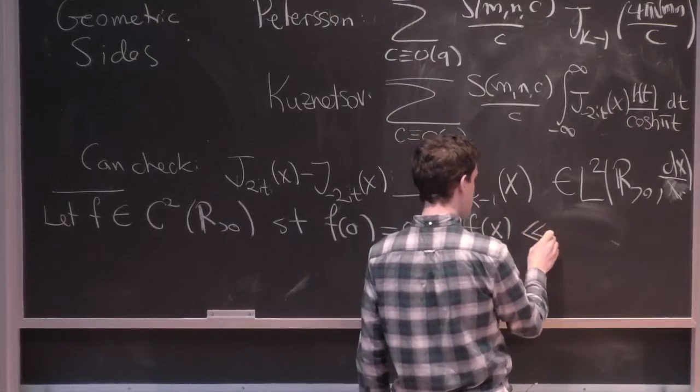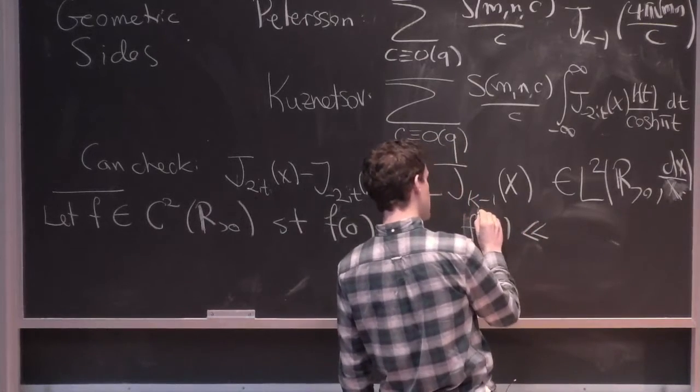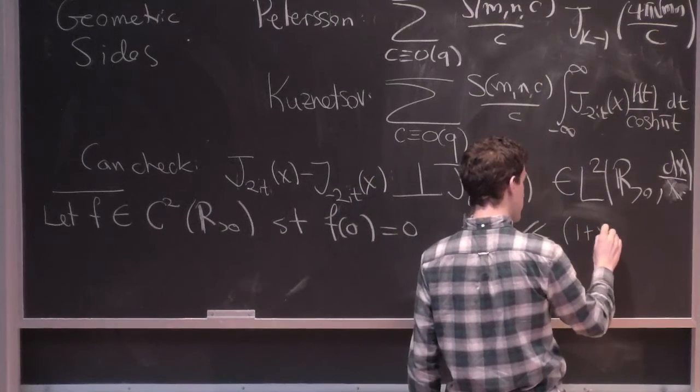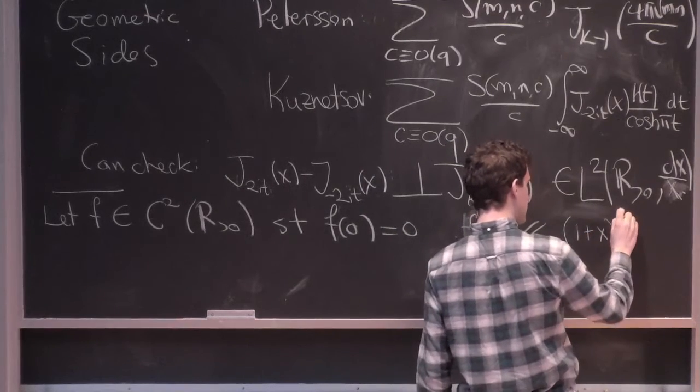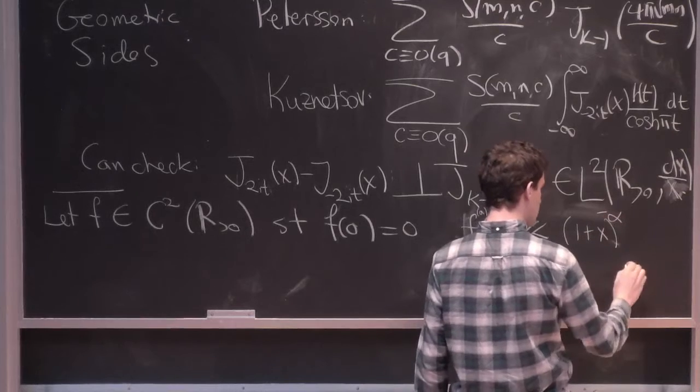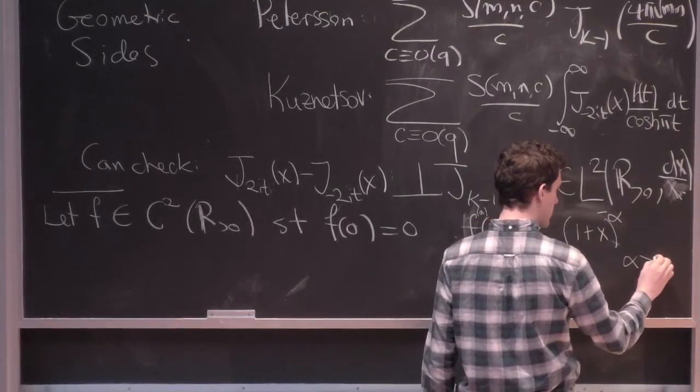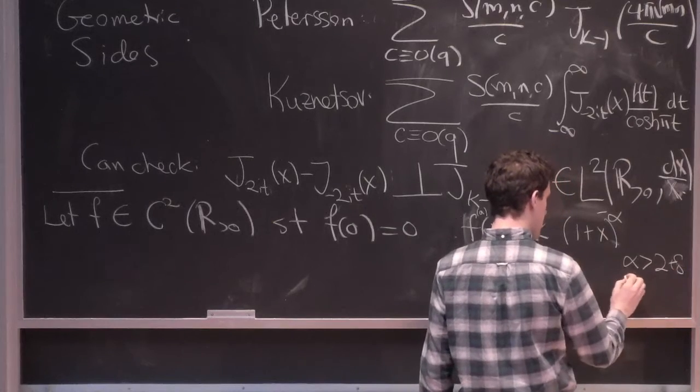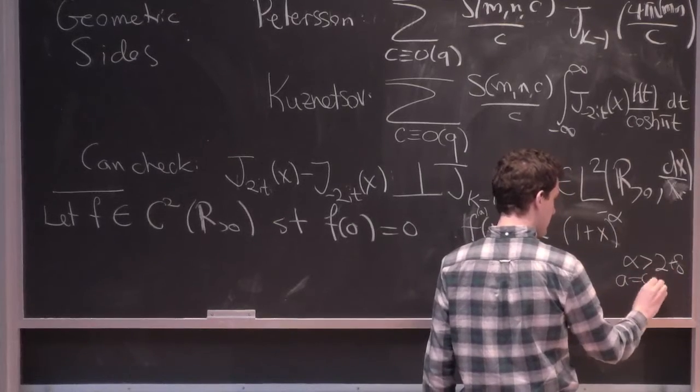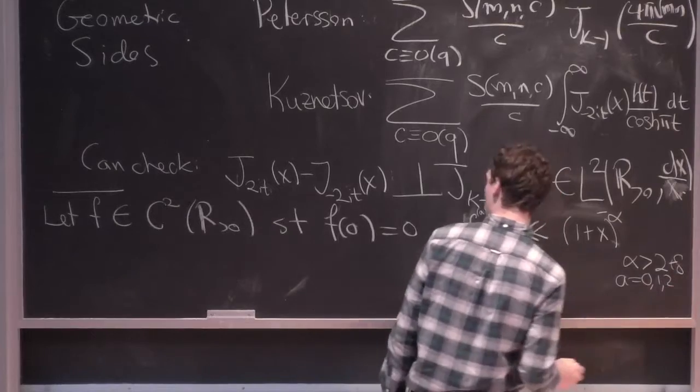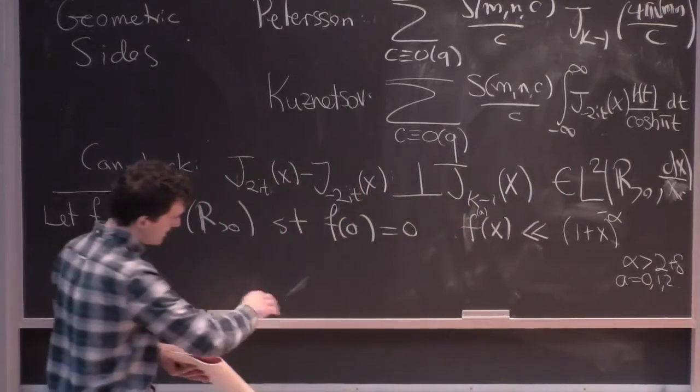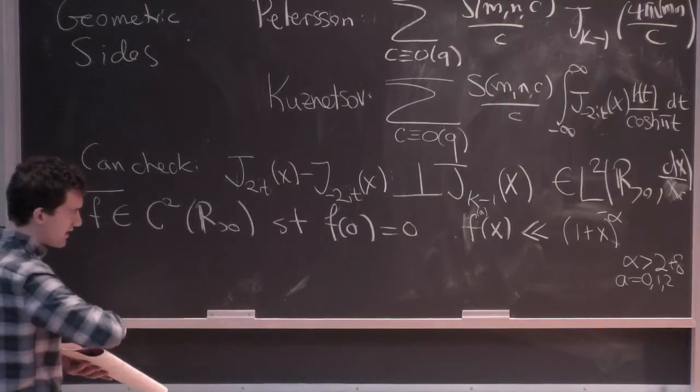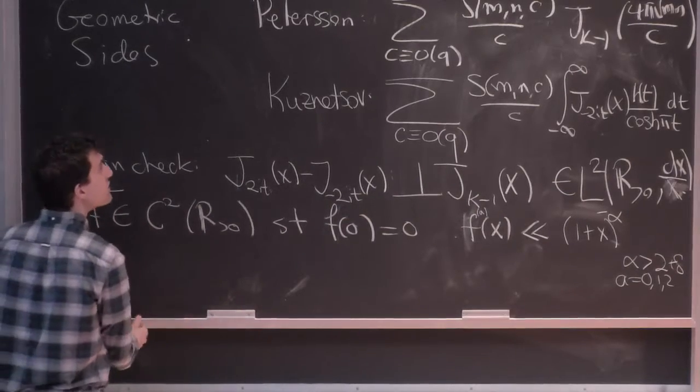So it satisfies, say, the a-th derivative of f has some bound like this, where α is bigger than 2 plus some small number δ, and this holds for a is 0, 1, and 2. So this kind of just says that this test function decays at 0 and is not oscillating too wildly.